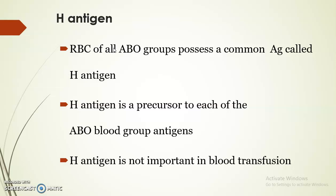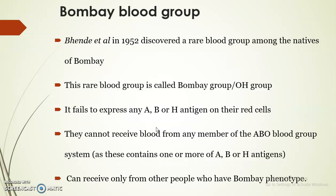Another antigen present on the surface of all RBCs is the H antigen. It is a common antigen and serves as a precursor of all other blood group antigens, mainly ABO blood group antigens. H antigen is not important in blood transfusion. Another type of blood group is the Bombay blood group — it is a very rare blood group identified among the natives of Mumbai. Bhende et al. discovered this rare blood group in 1952 and named it the Bombay group or OH group.